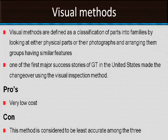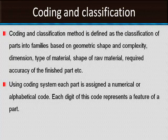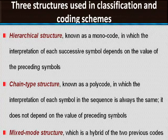The visual method is a very old and crude method. Its advantage is very low cost, but the disadvantage is that it is the least accurate. The coding and classification method is defined as classification of parts into families based on geometric shape and complexity, dimension, type of material, shape of raw material required, and required levels of accuracy of finished parts. Using the coding system, each part is assigned a numerical or alphanumerical code. Based upon the code, we can group the parts. Each digit of the code represents a feature of the component. It is a very versatile and widely used method.